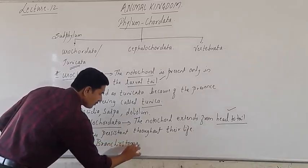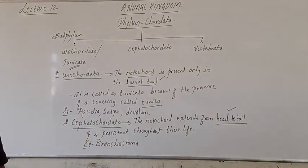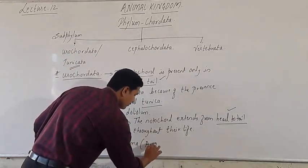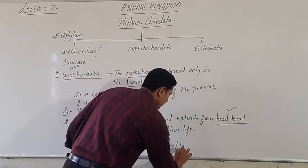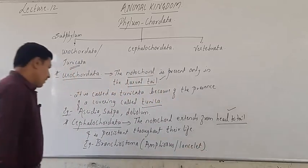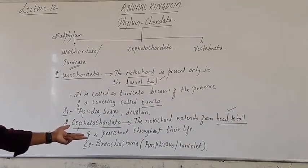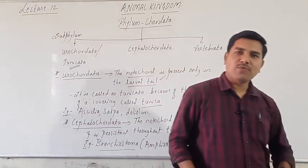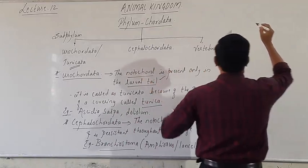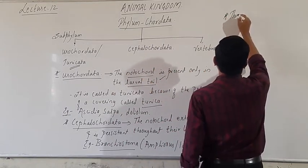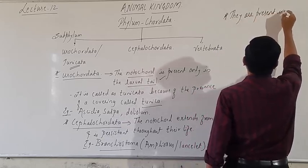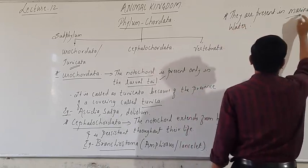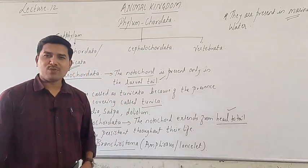The example for Cephalochordata is Branchiostoma, commonly called Amphioxus or Lancelet. They are commonly called Amphioxus or Lancelet. They are present in marine water.